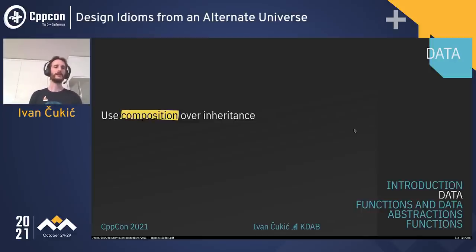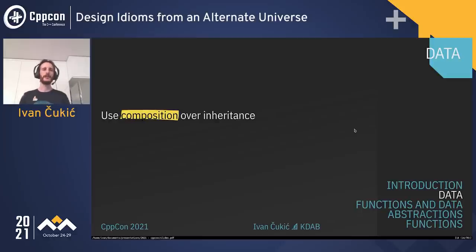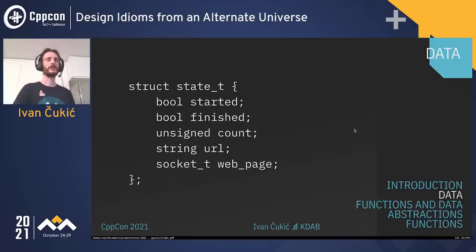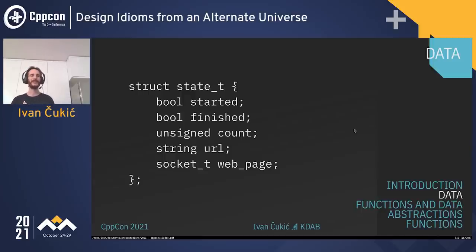We often hear the recommendation 'use composition over inheritance' — in Java, in C++, especially when trying to inherit from anything in the standard library. The question is: what is composition in this case? With multiple inheritance, inheritance is also some kind of composition. The composition people usually think about is creating a structure or class and putting data members inside. This is one way to compose types, but it's maybe almost as problematic as inheritance itself.